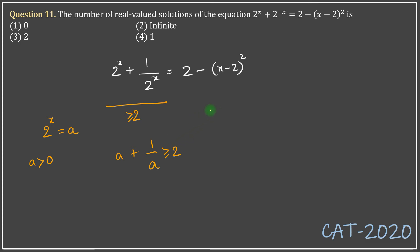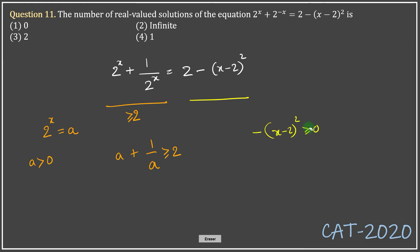Now let's think about the right-hand side. It has an expression which is 2 minus a perfect square. Any perfect square is always greater than or equal to 0. Multiplying that inequality by a negative sign, minus (x minus 2) whole squared is always less than or equal to 0. Adding 2 on both sides, we get that 2 minus (x minus 2) whole squared is always less than or equal to 2.